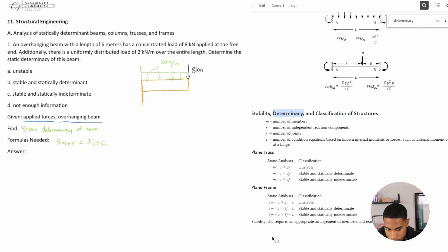All right, what would M be? M is equal to the number of members. So we just have literally one member there. So I would put M is equal to one.